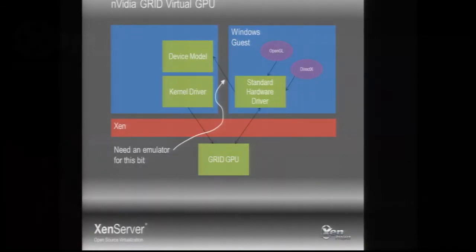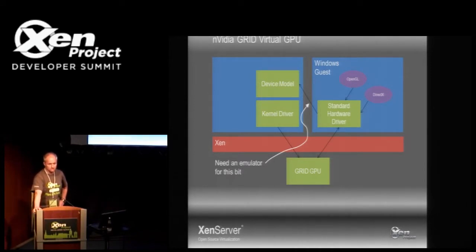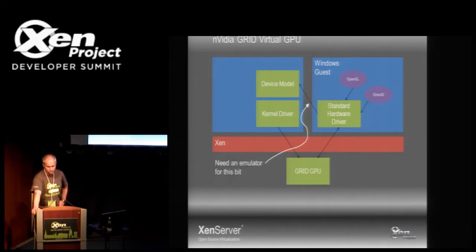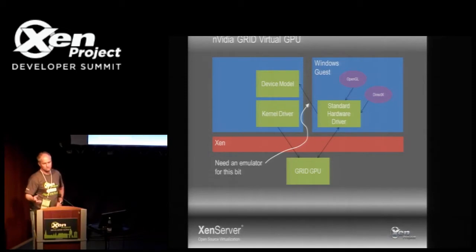This is a slide of the general NVIDIA Grid virtual GPU architecture. The basic idea is that in the guest, the OS sees an NVIDIA GPU — it looks like a piece of hardware. This has advantages because you don't need a special driver; you can use the NVIDIA standard hardware driver. Underneath, what you've got is essentially a hardware GPU — just a slice of the actual real GPU. You can think of this as SR-IOV, but it's not actually SR-IOV hardware; you need some software to make it work. The kernel driver in DOM0 would normally be the physical function driver in SR-IOV world, but you've got this extra device model on top which creates the virtualization layer, and you need an emulator to make that work.